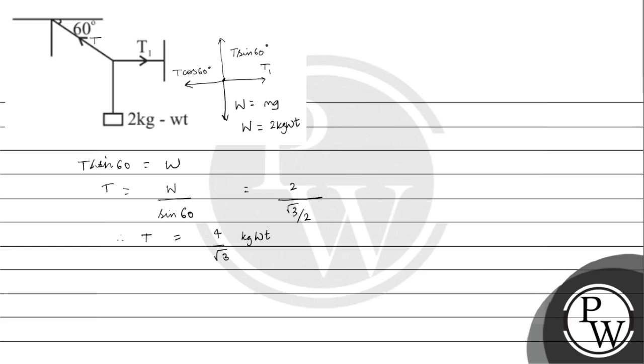Now we will calculate T1. T1 is the horizontal component of this T force, the tension force T, which is T cos 60. This is equal to 4 by root 3 into cos 60, which is half. This gives us T1 equals 2 by root 3 kg weight.